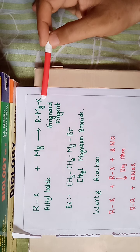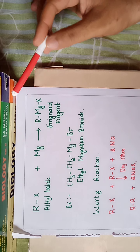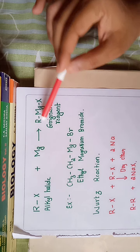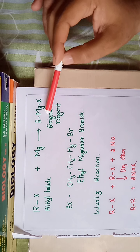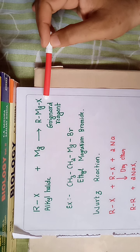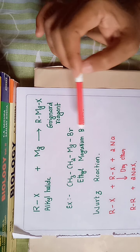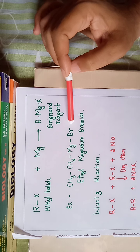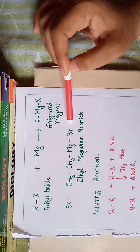It is one of the organometallic compounds or organometallic halides. In this structure, between carbon and magnesium you can find a covalent bond, and between magnesium and halogen you can find an ionic bond. An example of a Grignard reagent is ethyl magnesium bromide.